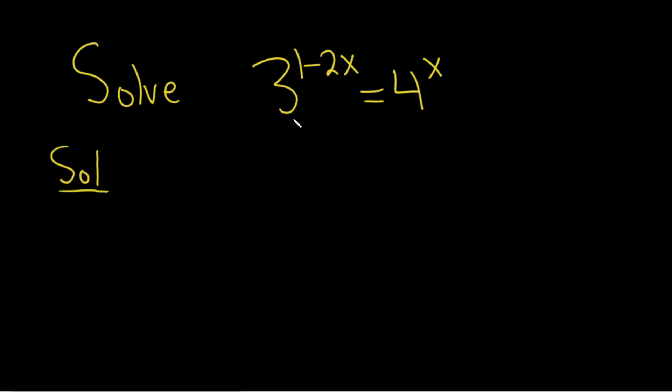So we have an exponential equation, and a lot of times when we have these types of equations, we'll try to write both sides using the same base. However, this time we have a 3 and a 4, so that doesn't appear to be a very easy option.